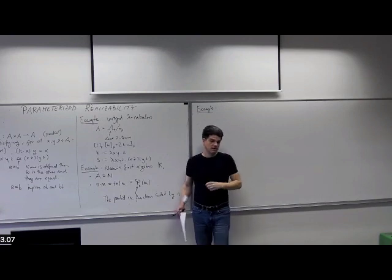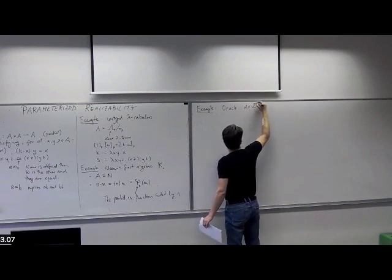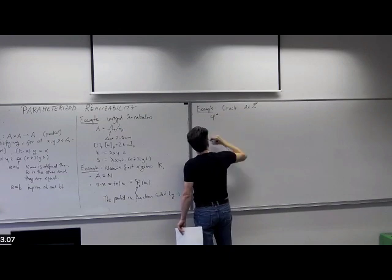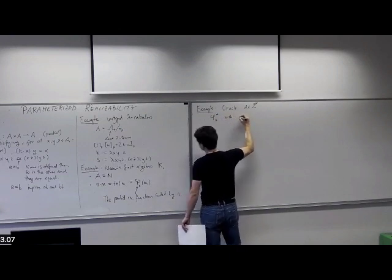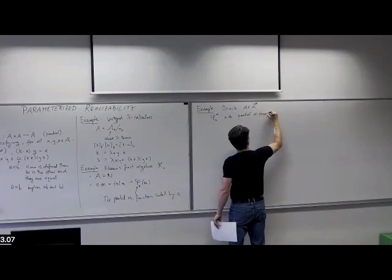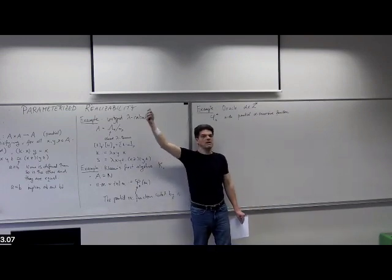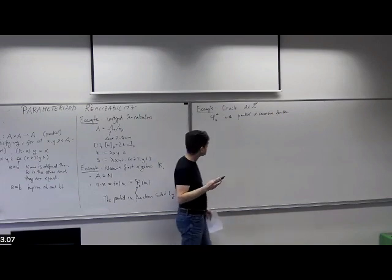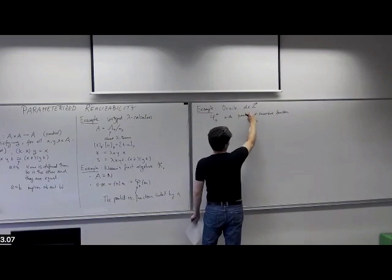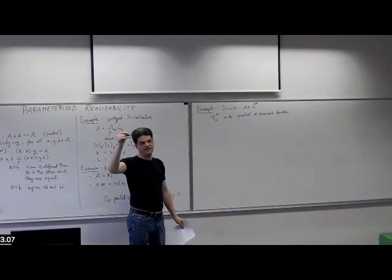An oracle is an element of the Cantor space — the space of infinite sequences of zeros and ones. Then we have φ^α_n(m), the n-th partial α-recursive function. These are functions which have the additional ability to read input from the outer world from whatever α they were given — an extra primitive instruction you could run. So for any k, you get to inspect α(k).